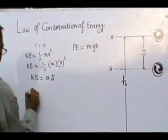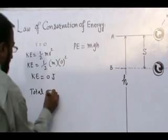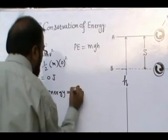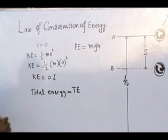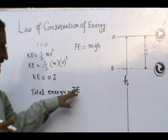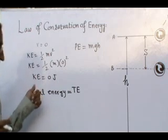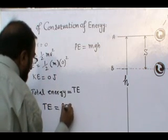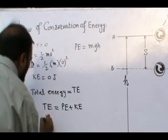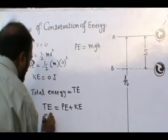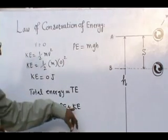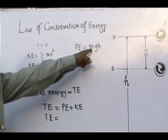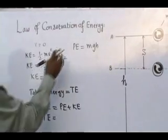Now total energy — I am making its abbreviation as TE — TE is equal to total energy. Total energy is equal to potential energy plus kinetic energy. Kinetic energy is zero joules and potential energy is equal to mgh. If we put the values of PE and KE,